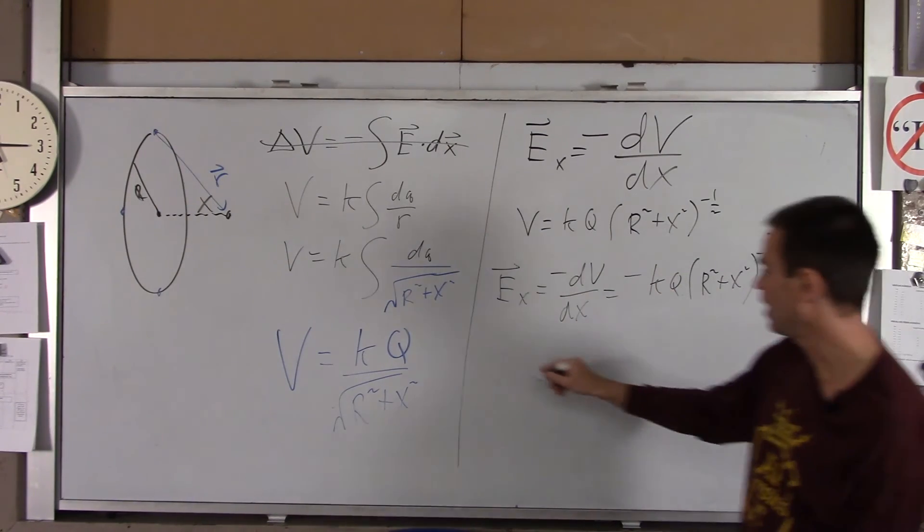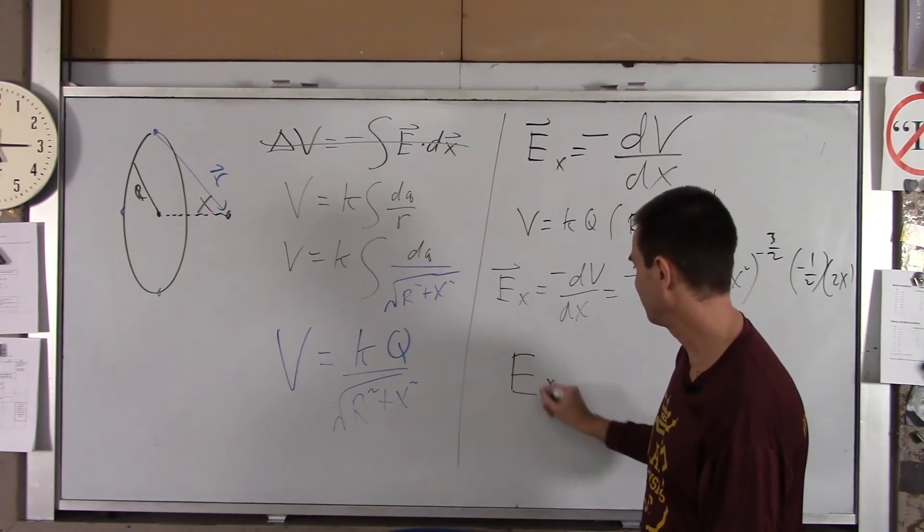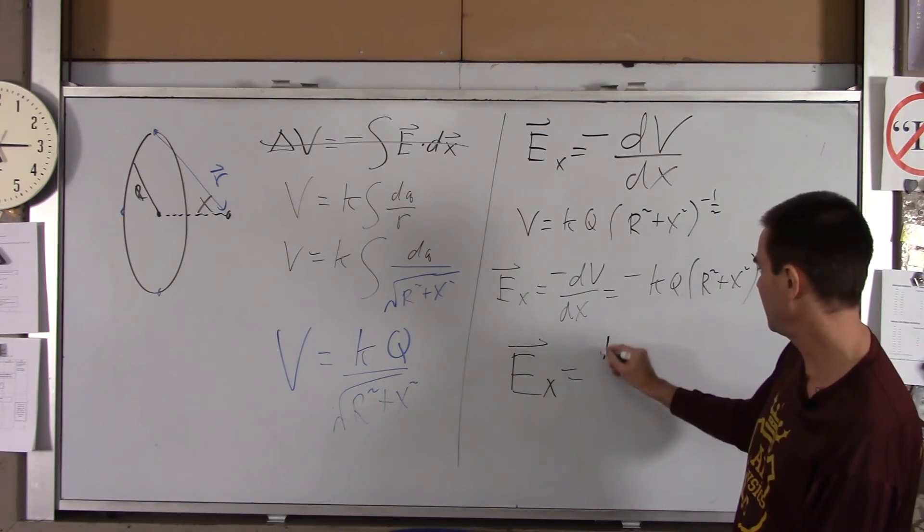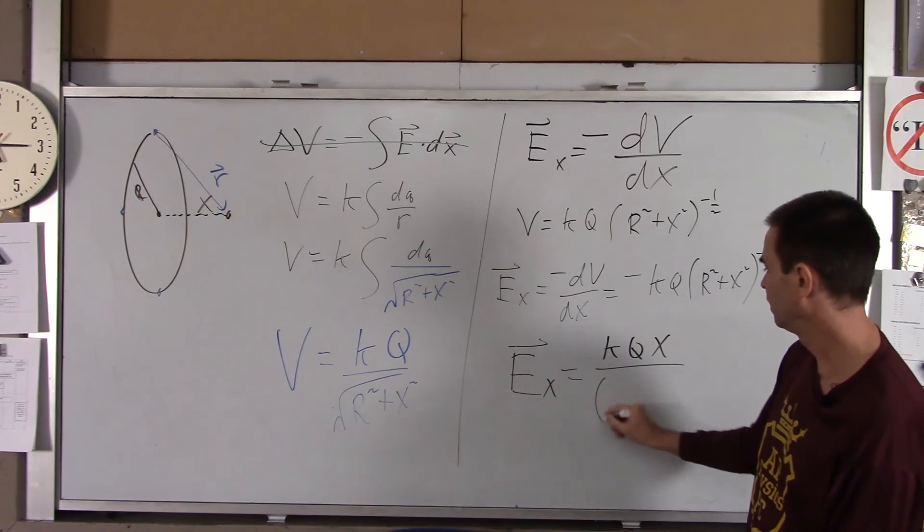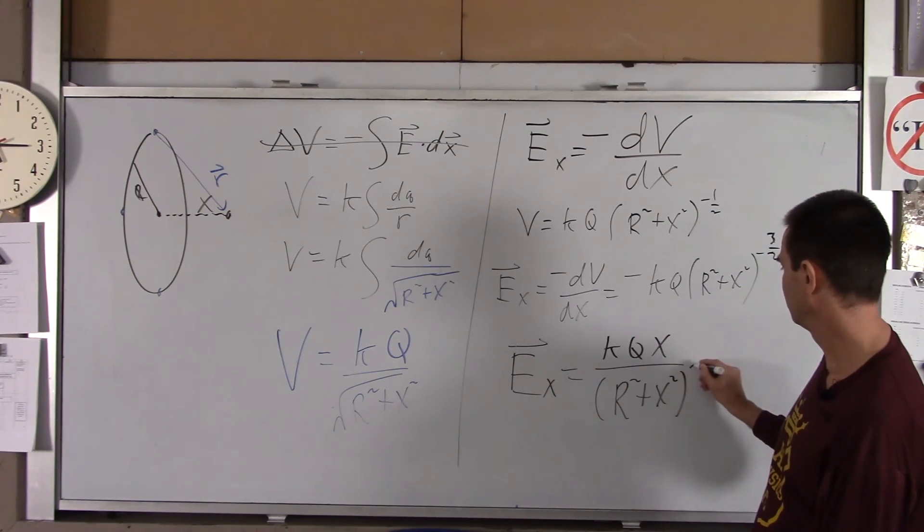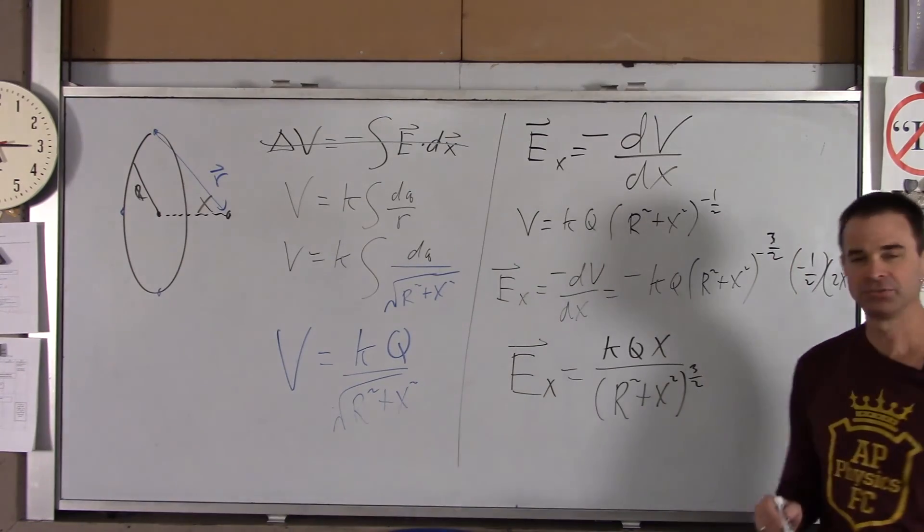You got a negative there, a negative there, they drop out, and you get the following equation. You get KQX over big R squared plus X squared to the three-halves.